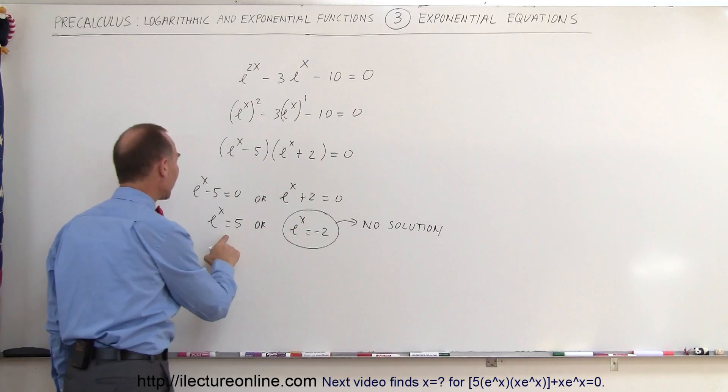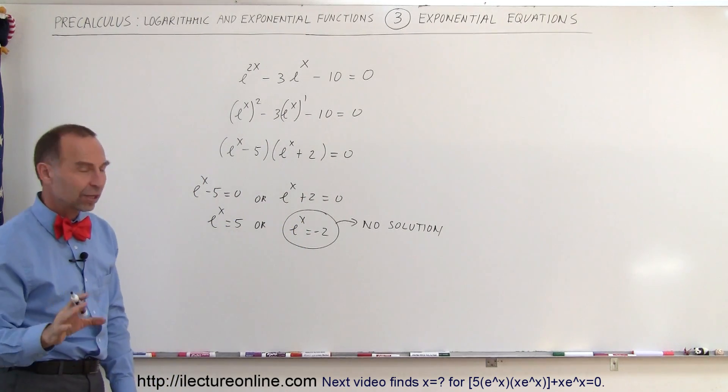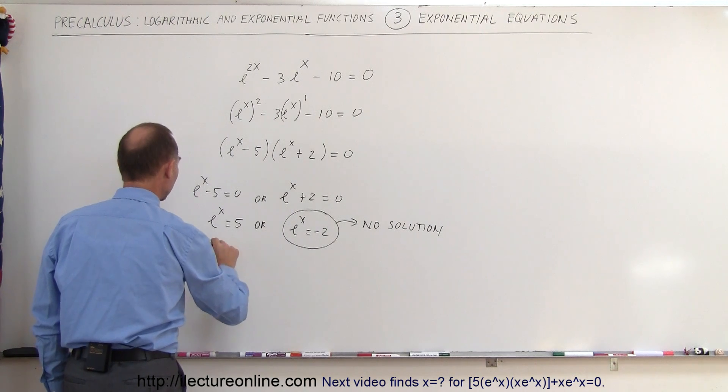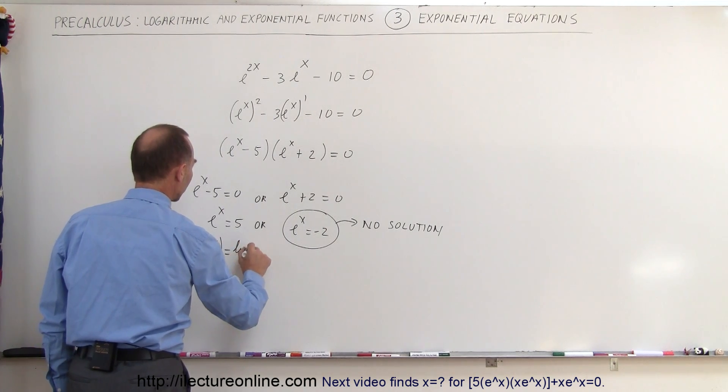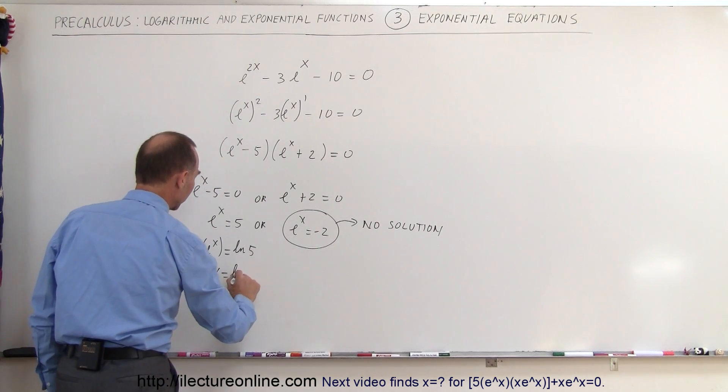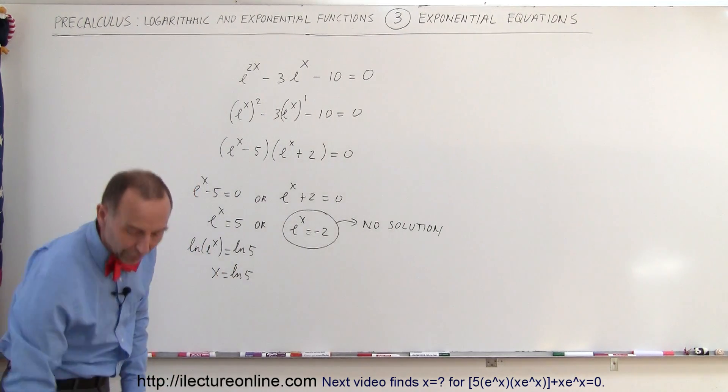But then we still have this portion right here, and there we can have the solution. So here we're going to take the natural log of both sides. The natural log of e to the x is equal to the natural log of 5. Of course, the natural log undoes the exponential, so we get x equals the natural log of 5.